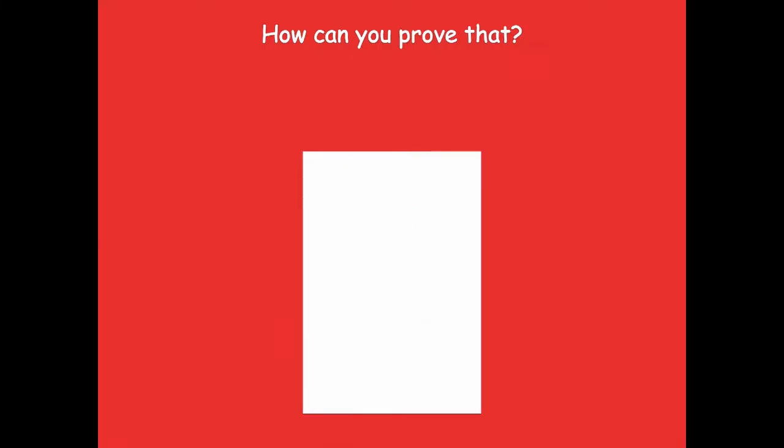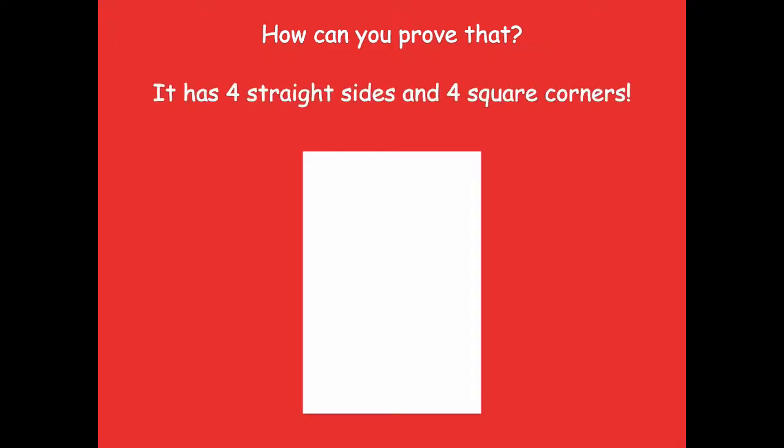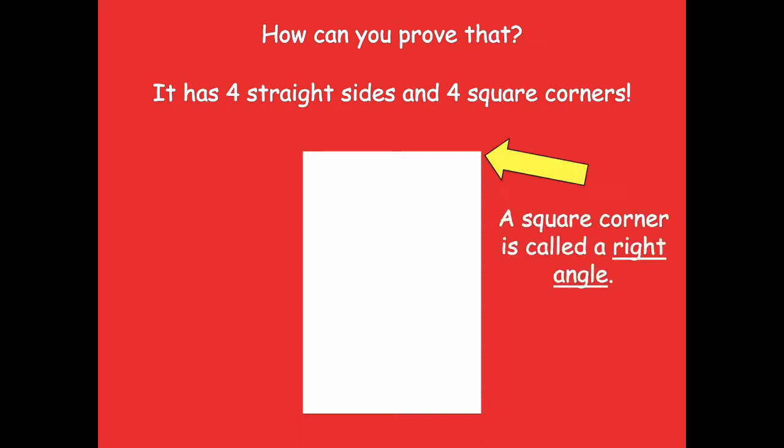So how can we prove that this is a rectangle? Well, we know that it has four straight sides and four square corners. A square corner is called a right angle.